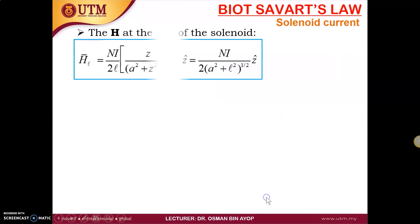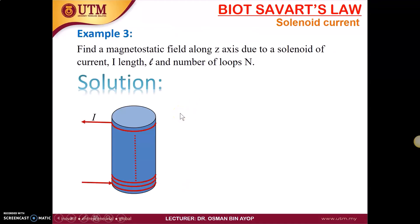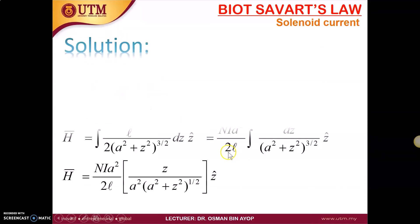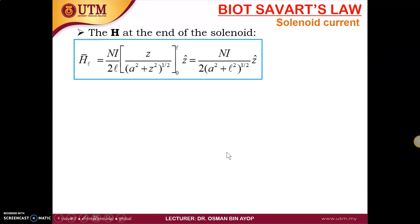We have two cases. The first case is the magnetic field intensity at the end of the solenoid. Let's see, this is our solenoid with the end and the center. At the end of the solenoid, you have to integrate from zero to l, from one end to another end. When we integrate this, we get H_l equal to Ni over 2l times z over (a squared plus l squared)^(1/2) in the z direction, equal to NI over 2(a squared plus l squared)^(1/2) z.